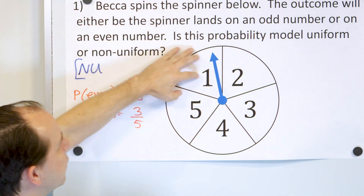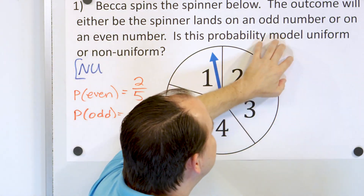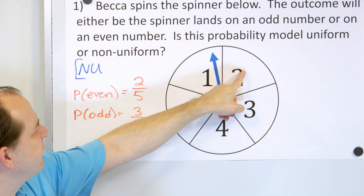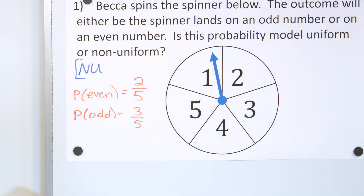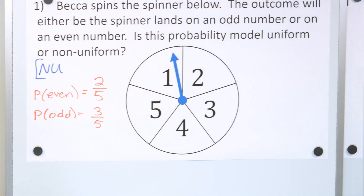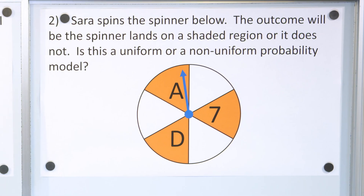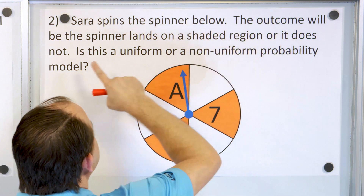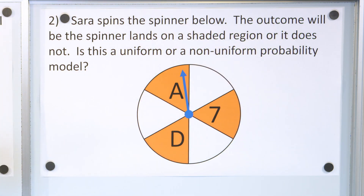We know this is non-uniform because the outcomes have differing probabilities and there are fewer even spaces, so the probability of that happening is less. Here is problem number two. Sarah spins the spinner below. The outcome will be the spinner lands on a shaded region or it does not. Is this uniform or non-uniform?